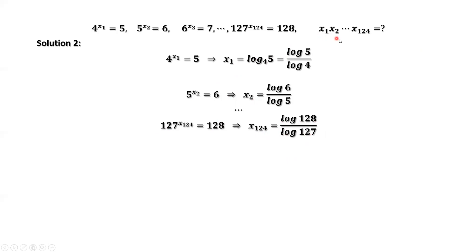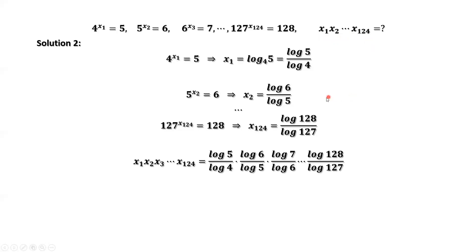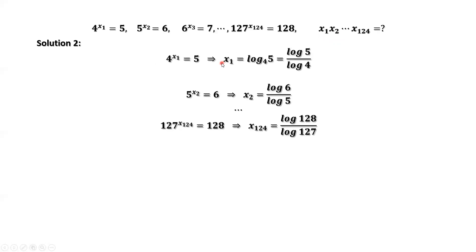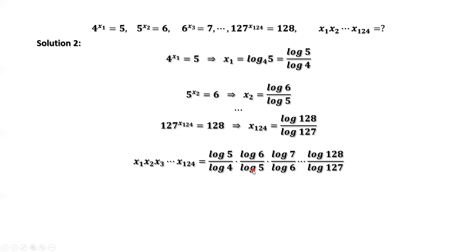What is the value of the product of x1, x2, until x124? We replace x1, x2, until x124 by these results. Then we have this equation. Now you can see log of 5 can be cancelled from both numerator and denominator. So log of 6 can be cancelled out, log of 7 can be cancelled out, and log of 127 can be cancelled out. The only thing left in the denominator is log of 4, and in the numerator is log of 128.